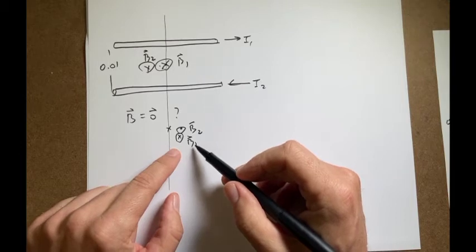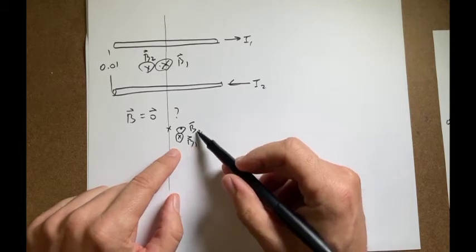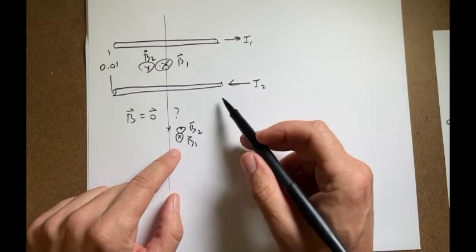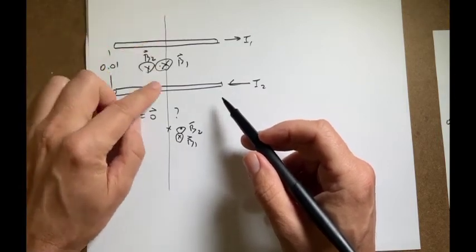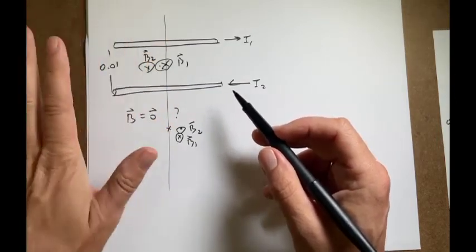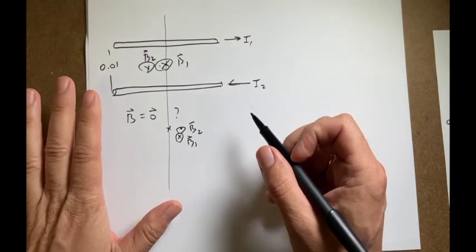And the answer is nowhere. Because B2 is always going to be higher than B1 because it's always closer to the wire 2. And the same thing is up here. So in this situation, there's nowhere that the magnetic field would be equal to zero.